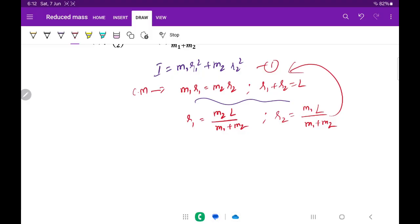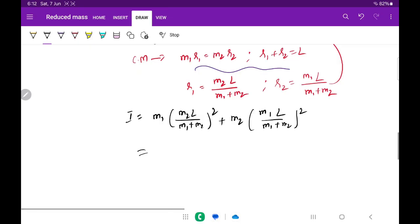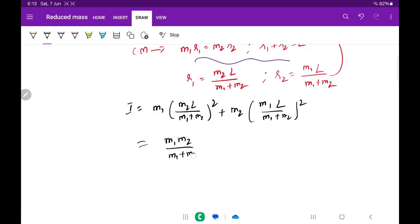Now I substitute r1 value and r2 value in equation 1. Then I becomes m1 times m2 L divided by m1 plus m2 whole squared plus m2 times m1 L divided by m1 plus m2 whole squared. Finally, if we simplify it, you will get m1 m2 divided by m1 plus m2 times L squared. Therefore, moment of inertia is reduced mass mu times L squared.